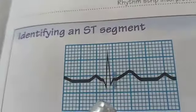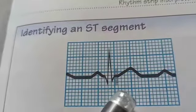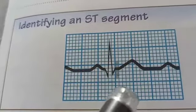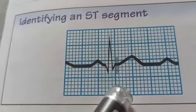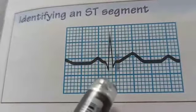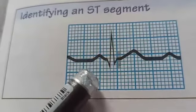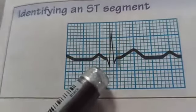The ST segment represents the end of ventricular depolarization and the start of ventricular recovery or repolarization. The J point marks the end of the QRS complex.